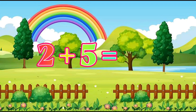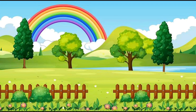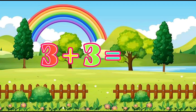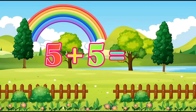Two plus five equals seven. Seven plus three equals ten. Three plus three equals six. Four plus four equals eight. Five plus five equals ten.